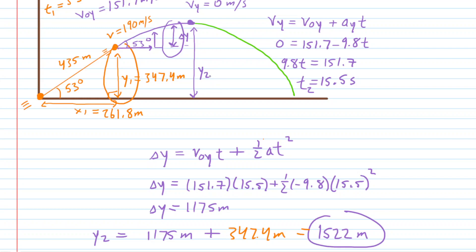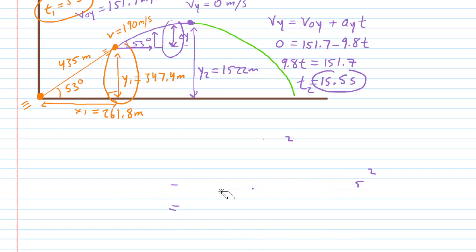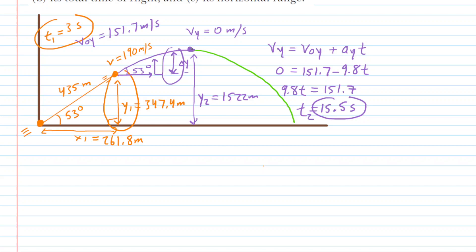Now we move on to Part B, which asks for total flight time. We have 3 seconds for the orange part and 15.5 seconds for the purple part. What we still need is the time for the green segment. For the green segment, the initial velocity in y is 0 because the rocket is starting at maximum height. It will fall a vertical displacement of negative 15.22 meters, and it's in free fall, so the acceleration is negative 9.8 meters per second squared.